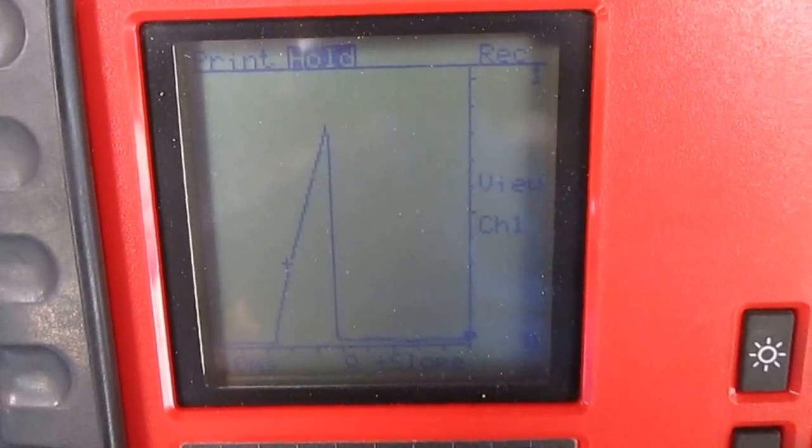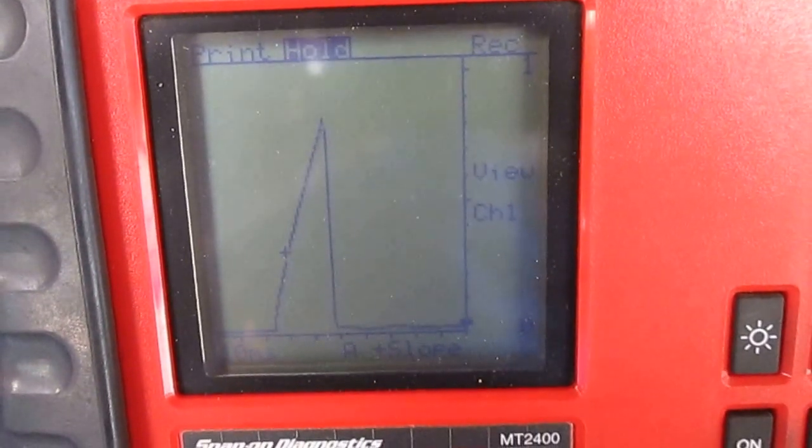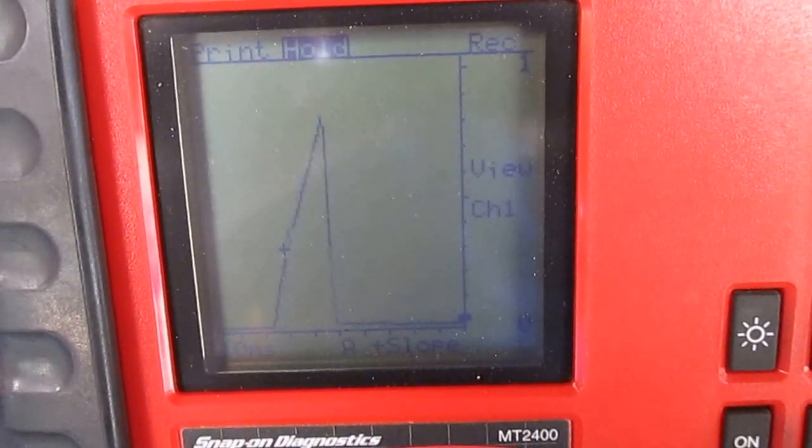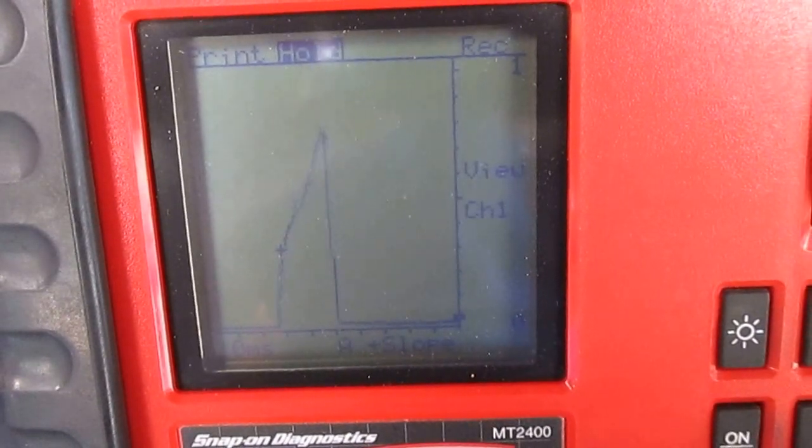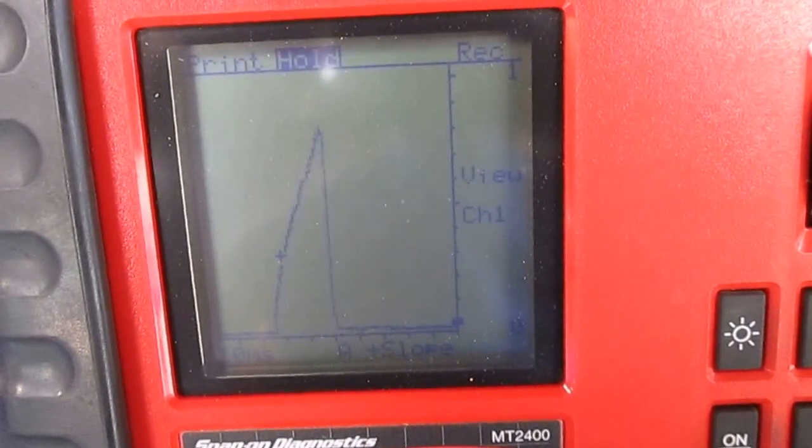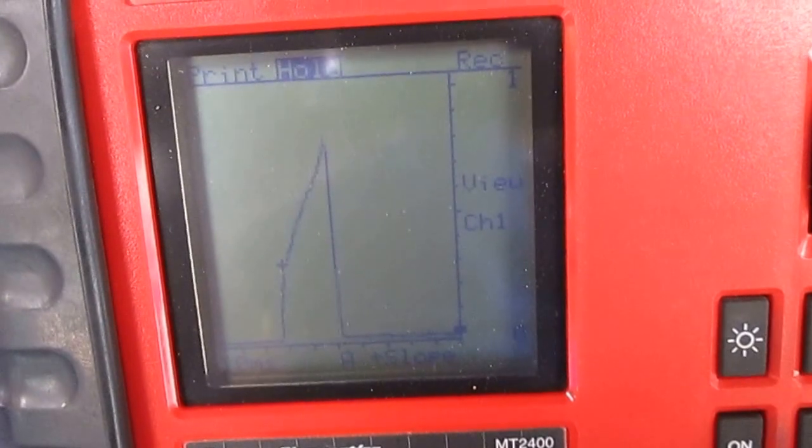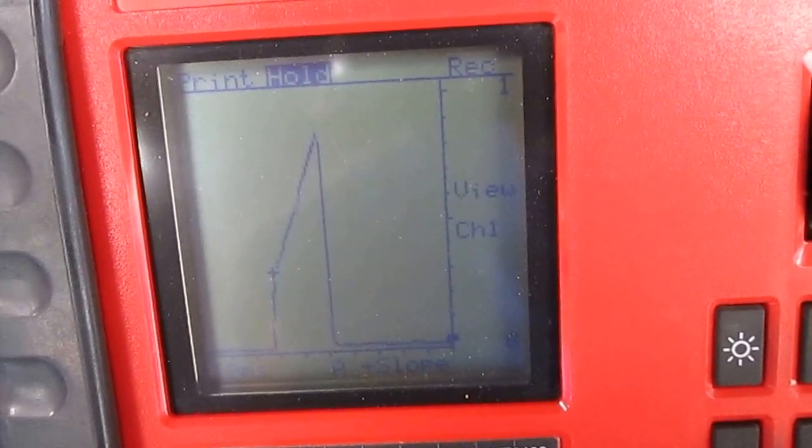Current ramp testing is a pretty good way of testing where this coil hasn't filled all the way. You can see how it breaks up on the pattern going up on the front signal line.